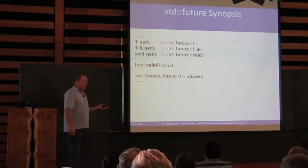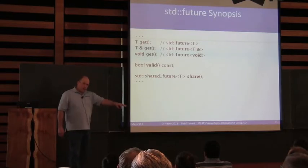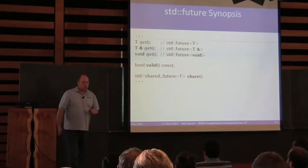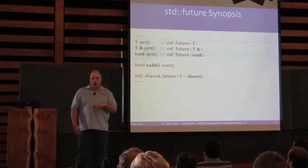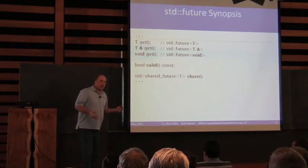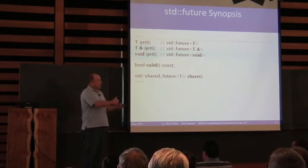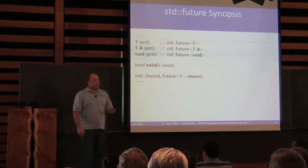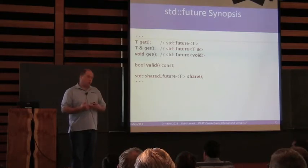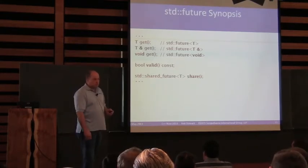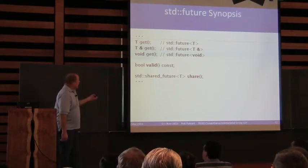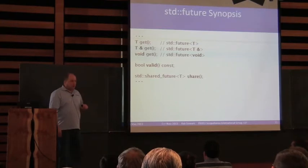Get will block until the result is ready — that means when the asynchronous task is finished and the result has been set. Valid does not tell you when the asynchronous result is ready; it merely tells you that this is not a default-constructed future or it hasn't been moved from — that it has an associated asynchronous result to give you at some point. If you call valid after you call get, you get false — it tells you there is no value to retrieve at that point.